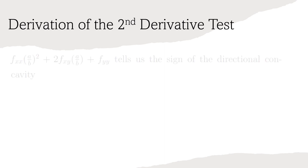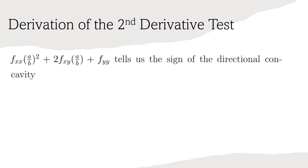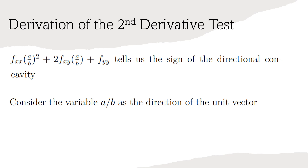So the following expression tells us the sign of the directional concavity: f sub xx times (a/b) squared plus 2 times f sub xy times (a/b) plus f sub yy. Recall that a and b are the x and y components of the unit vector u, so the variable a/b intrinsically contains the information pertaining to the direction u is pointing. Notice that treating a/b as a variable yields a quadratic form. Let us make use of the quadratic formula.